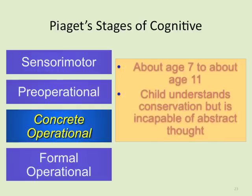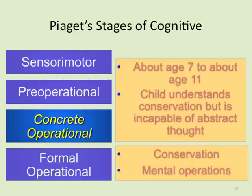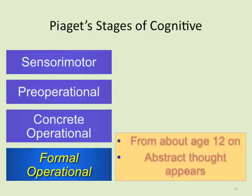Concrete operational is the third stage, from about age seven to eleven. Children understand conservation — they understand that a small amount in one jar can look like a lot in another — but they are incapable of abstract thought. They can't process imaginary numbers or abstract concepts like peace. They need very concrete, functional, hands-on information. Conservation and basic mental operations — going through one-step processes toward more complicated understanding — are emerging at this stage.